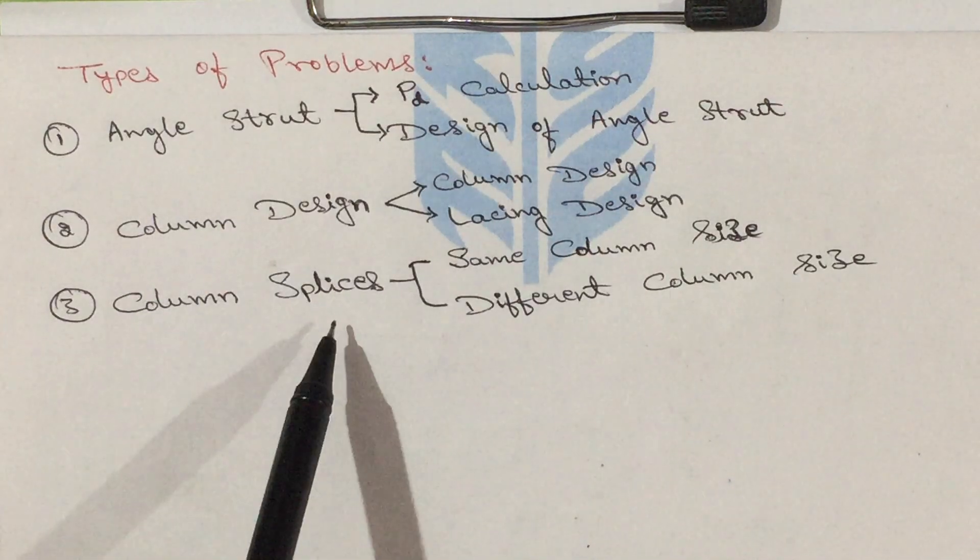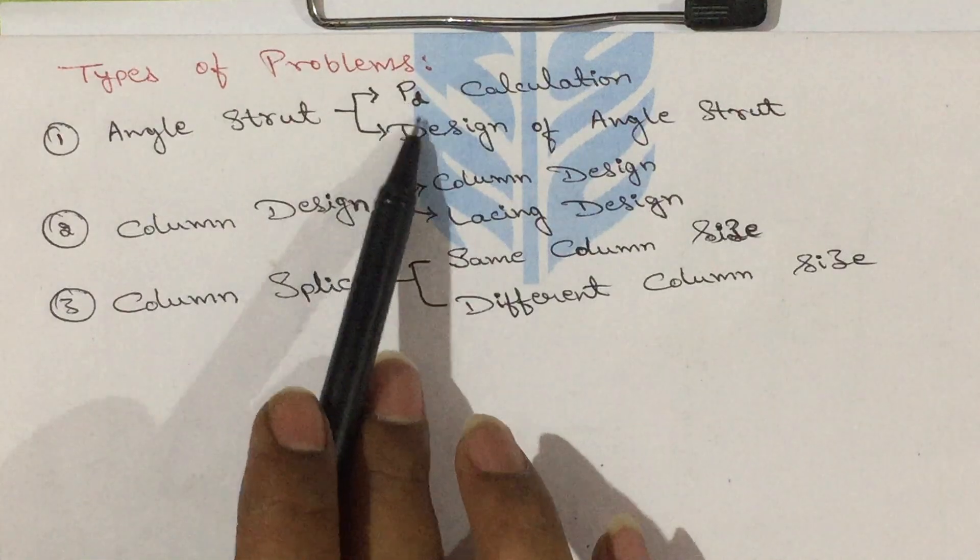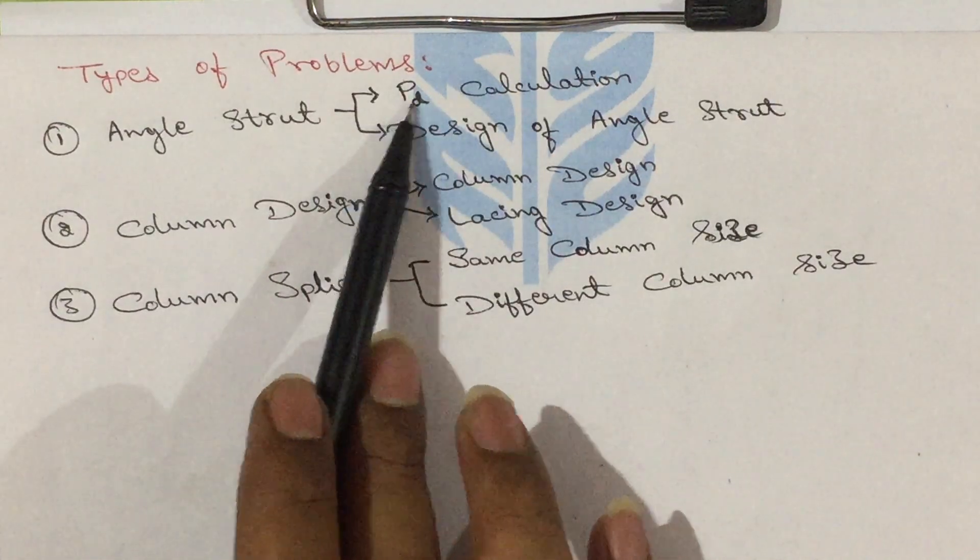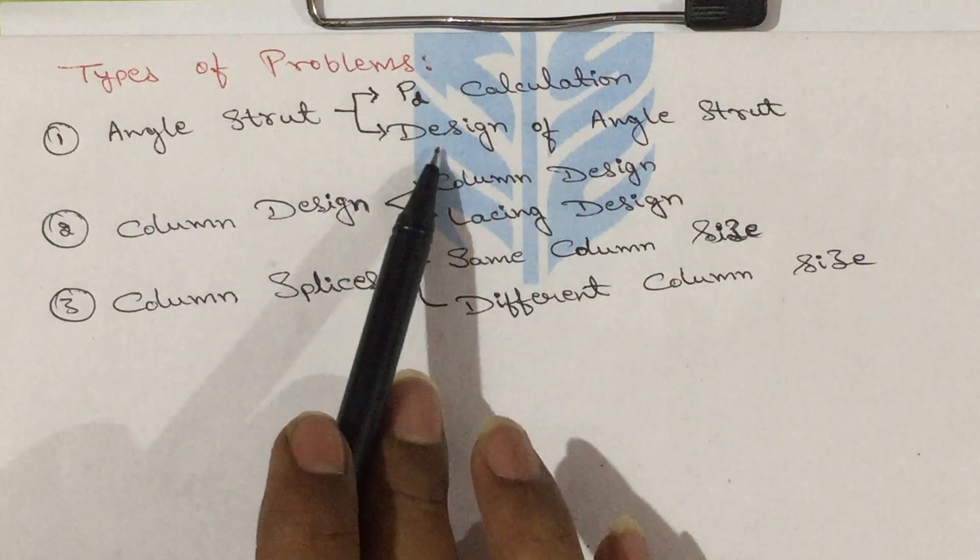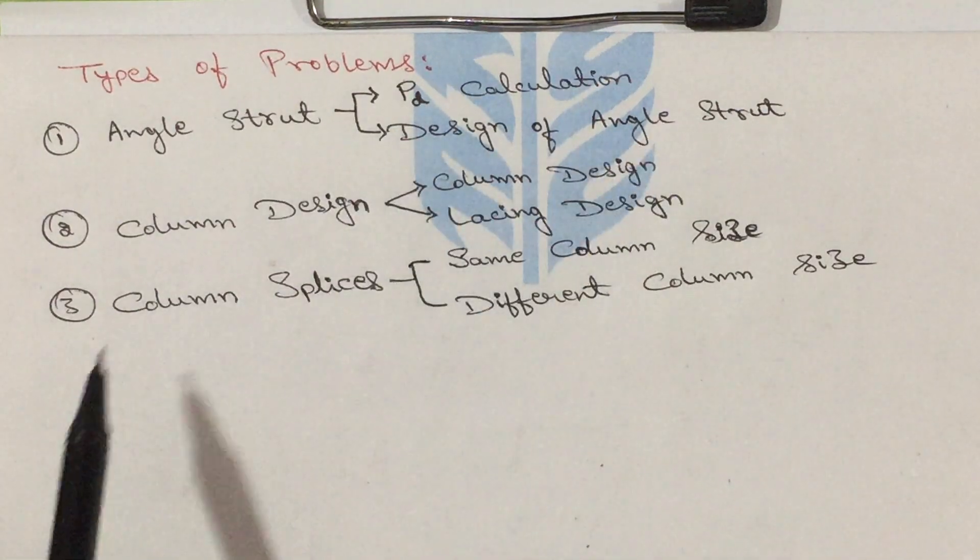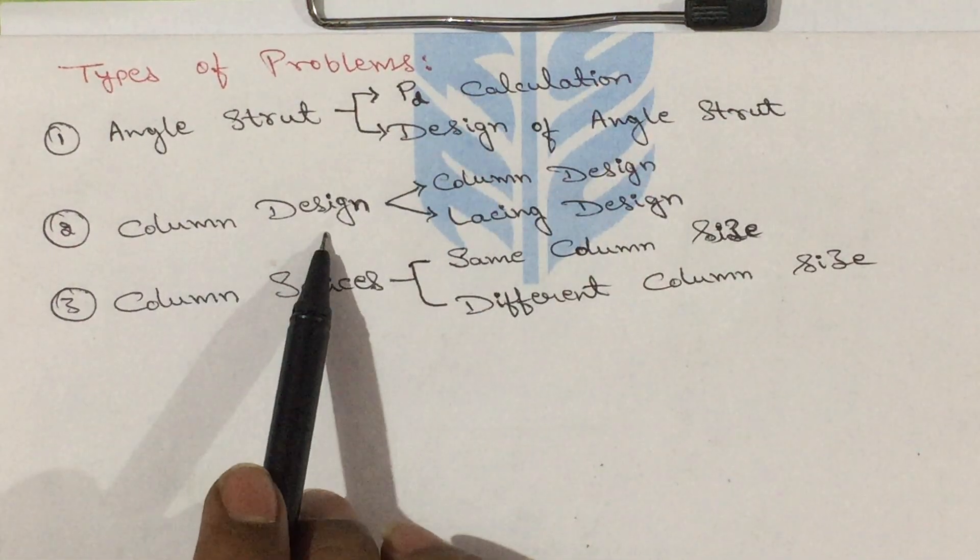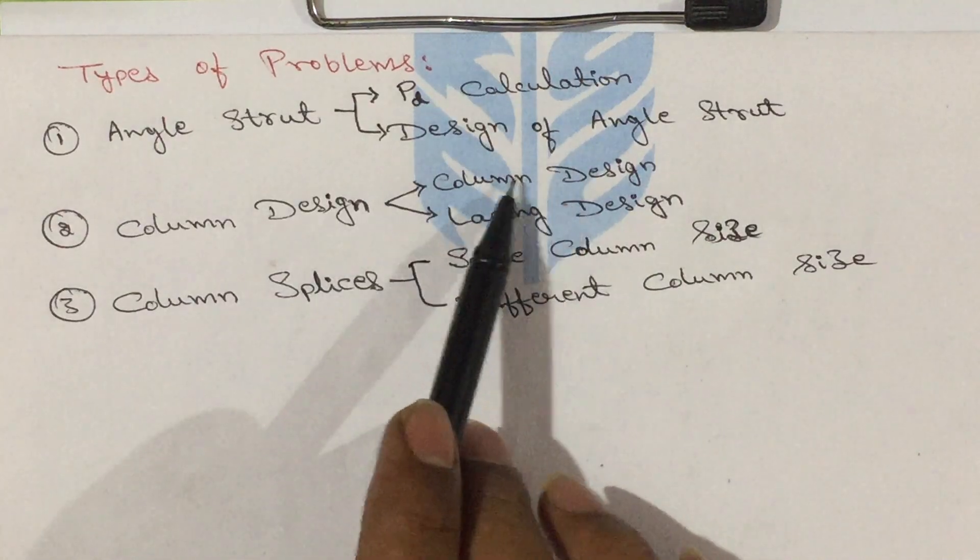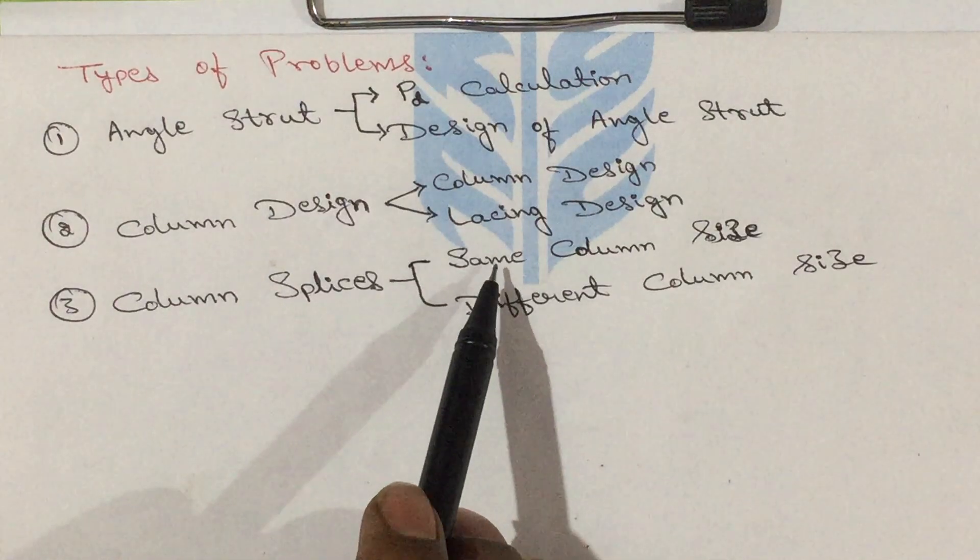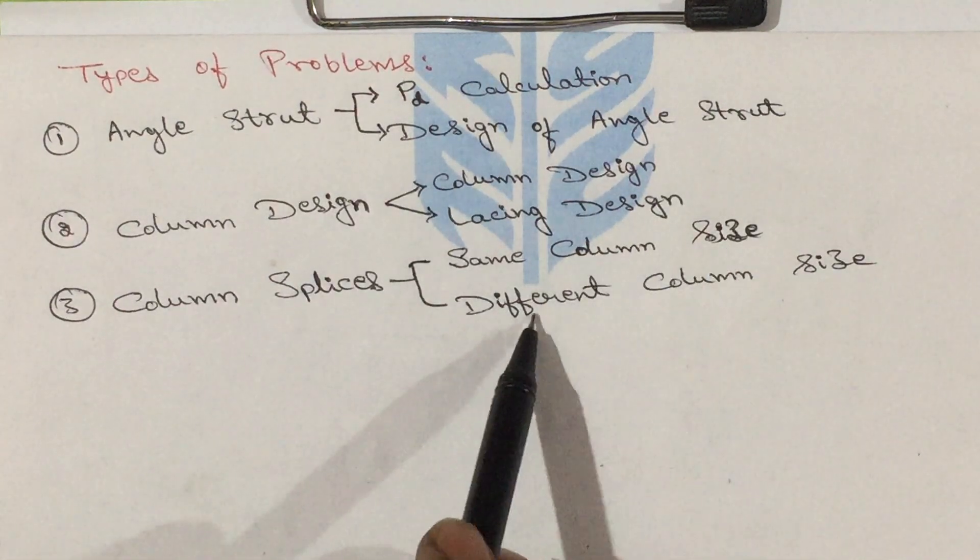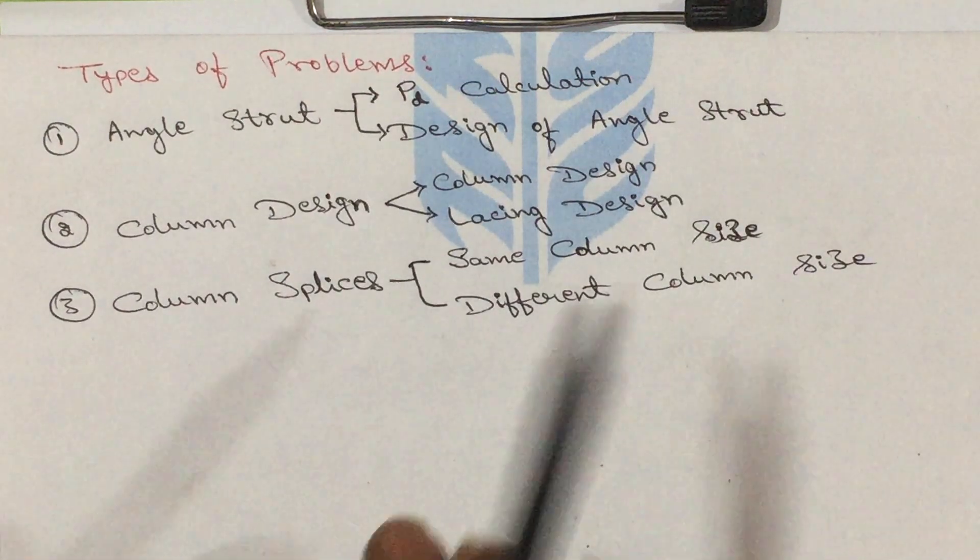column design, and column splices. In angle strut, we come across two types of problems: calculation of pd (design compressive strength), and design of angle strut. In column design, we mainly design the column as well as lacing. In column splices, we come across same column size or different column size problems.